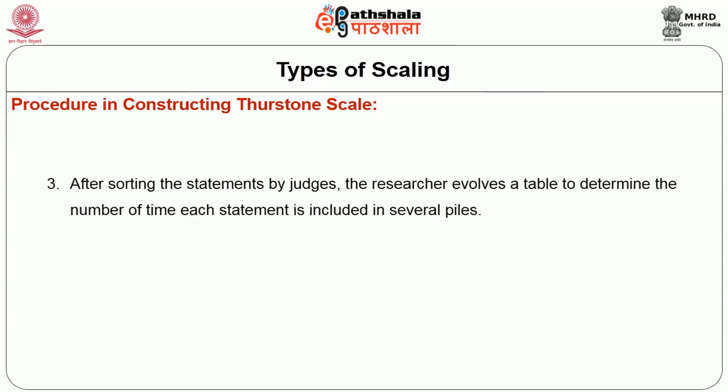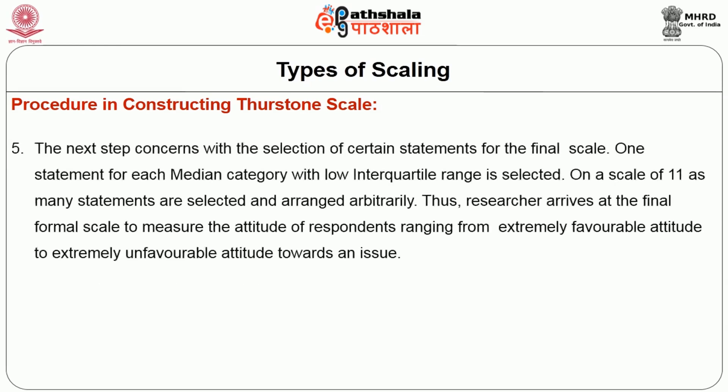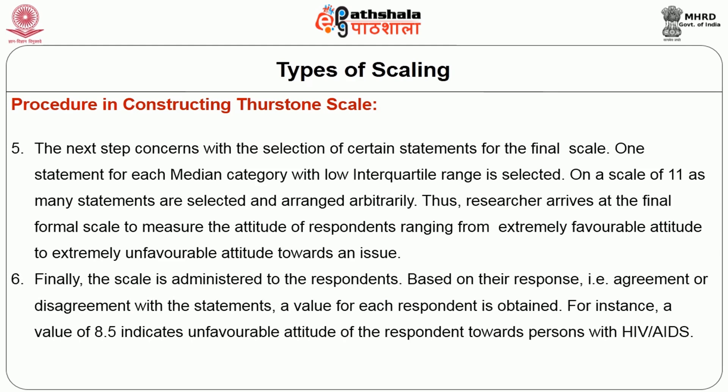Third, after sorting by judges, the researcher evolves a table to determine how many times each statement is included in various piles. Fourth, the scale value for each statement is determined by computing the median and interquartile range. Fifth, one statement for each median category with a low interquartile range is selected for the final scale. On a scale of 11, statements are selected and arranged arbitrarily. The researcher thus arrives at the final scale to measure respondents' attitudes from extremely favorable to extremely unfavorable. Finally, the scale is administered to respondents, and a value for each respondent is obtained based on their agreement or disagreement with statements.